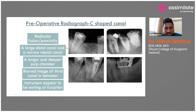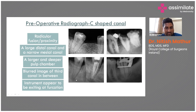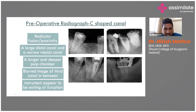The features are: radicular fusion or proximity of roots; a large distal canal with a small, narrow mesial canal; a deep and larger pulp chamber; and a blurred image of a third canal in between. These appear very frequently in C-shaped canals.